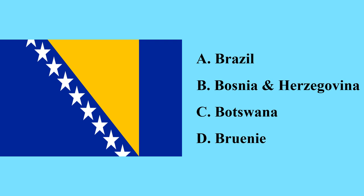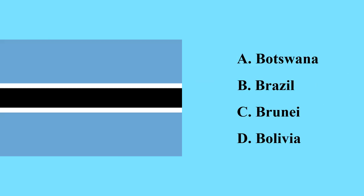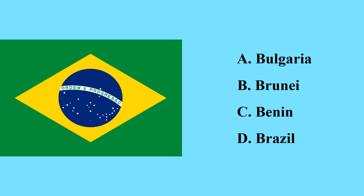Bosnia and Herzegovina was previously part of Yugoslavia, so it is a country in the Balkan region. This is a flag of Botswana — Botswana is a country in southern Africa and is the largest diamond producer in the world. This is the flag of Brazil.